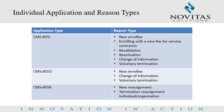Individual application and reason types: For the CMS 855I form, reason types include new enrollee, enrolling with a new fee-for-service contractor, revalidation, reactivation, change of information, and voluntary termination. For the CMS 855I form, reason types include new enrollee, change of information, and voluntary termination. New reassignment, termination of a reassignment for individual, and termination of reassignment for organization are the three different reason types for the CMS 855R form.